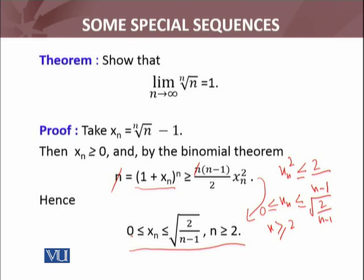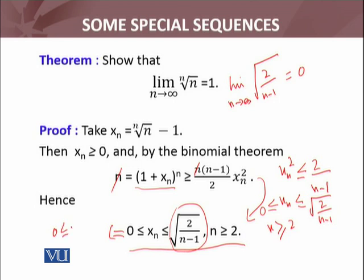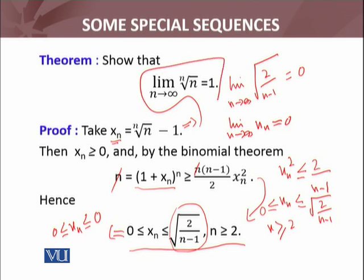Now I apply limits to each part. The limit as n → ∞ of 2/(n−1) equals 0. So from this inequality I have 0 ≤ x_n ≤ √(2/(n−1)) → 0, and by using the useful remark (squeeze theorem), I can conclude that lim_{n→∞} x_n = 0. From this, the required limit — lim_{n→∞} n^(1/n) = 1 — is proved.